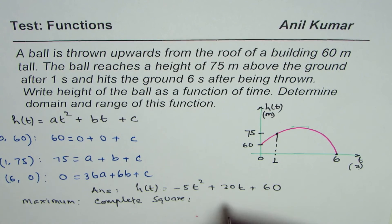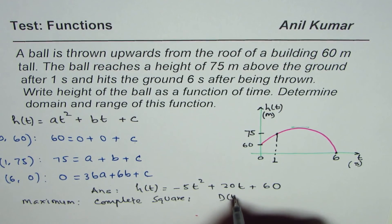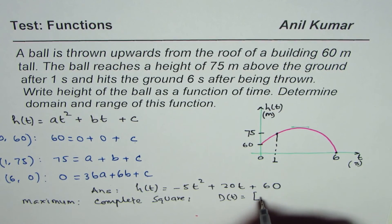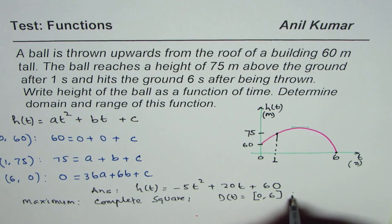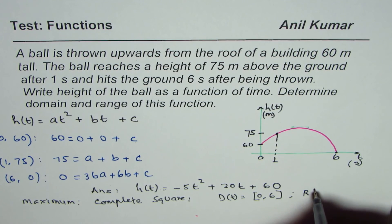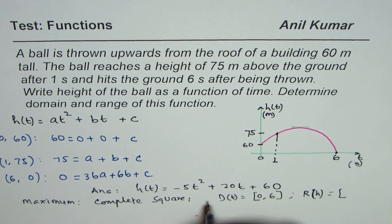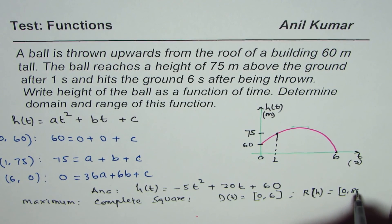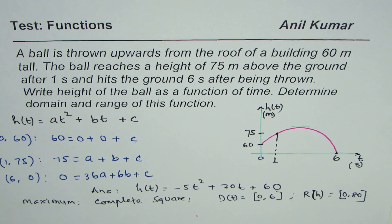So do complete squares to find the maximum correct, and then you will get your answer. Let me write domain here. Domain for the function is from 0 to 6, and the range for height will be from 0 to 80. So that is the answer.